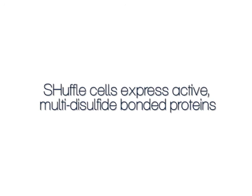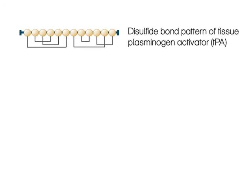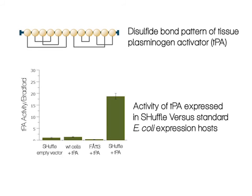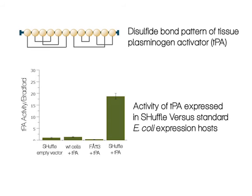For certain multi-disulfide-bonded proteins, shuffle is the only E. coli strain that can express active protein. This is illustrated when tissue plasminogen activator, with six disulfide bonds, is expressed in various strains. TPA can fold and become active in the presence of cytoplasmic DsbC when expressed in shuffle cells. The shuffle cell lines are available in two versions, E. coli K12 and E. coli B, and are commercially available from NEB.